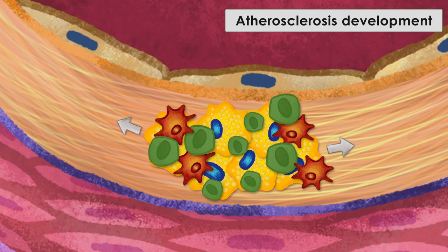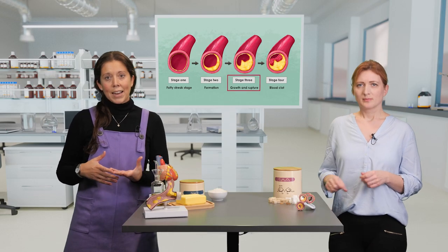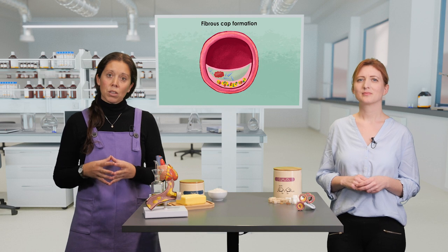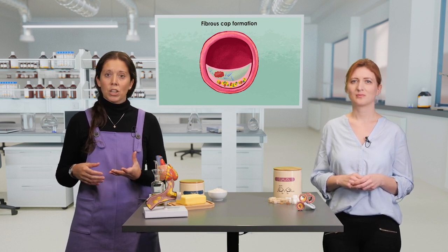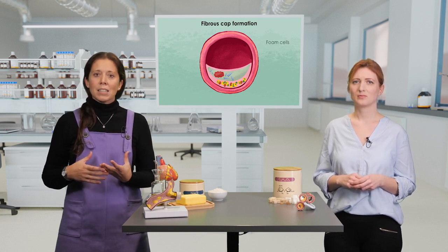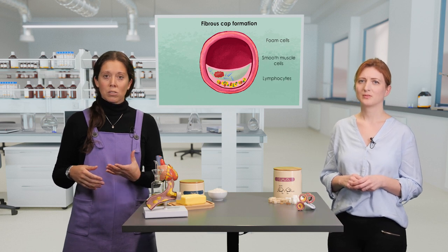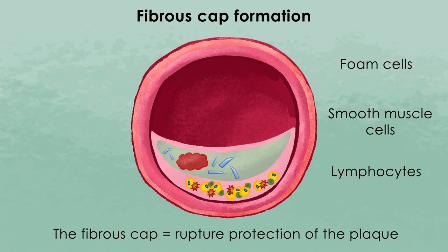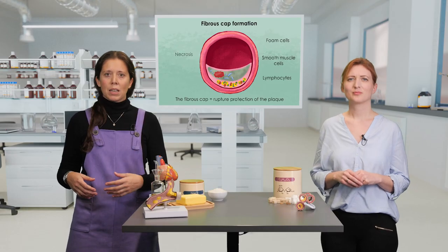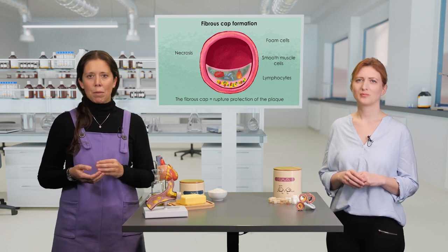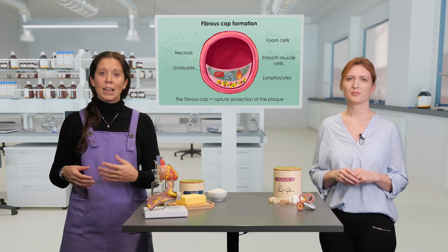This stage is then also characterized by fibrous plaque formation. The fibrous cap consists of connective tissue like collagen, which is also thicker and less cellular than the normal intima. It contains a huge number of foam cells, smooth muscle cells, and lymphocytes. The fibrous cap initially serves as a rupture protection of the plaque. But once the disease progresses, more and more immune cells in the plaque start dying in a process called necrosis, which enhances the inflammation and also makes the plaque increasingly unstable.